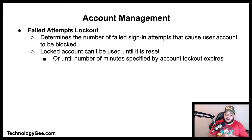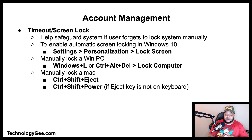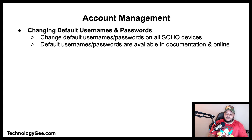The account lockout threshold policy setting determines the number of failed sign-in attempts that will cause a user's account to be blocked. A locked account cannot be used until it is reset or until the duration specified by the account lockout duration policy expires. Use automatic screen locking to safeguard a system if a user forgets to lock it manually. In Windows 10, go to Settings > Personalization > Lock Screen. You can manually lock Windows by pressing Windows+L or Ctrl+Alt+Delete and selecting Lock. On Mac, use Ctrl+Shift+Eject or Ctrl+Shift+Power. It is also important to change default admin usernames and passwords for SOHO routers and other devices as soon as possible, since default credentials are readily available in device documentation and online.